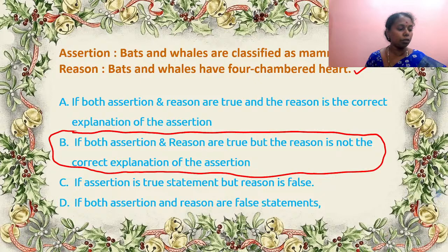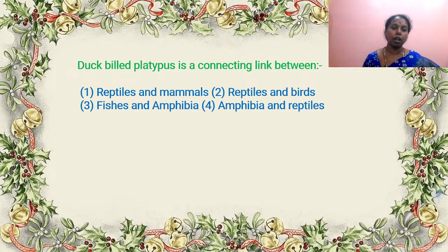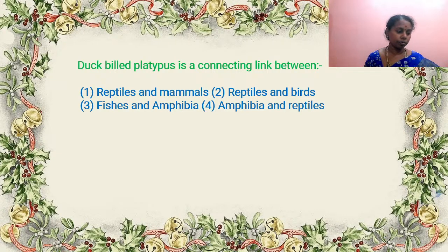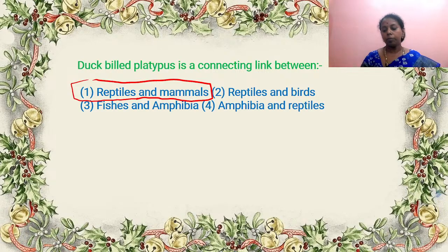Duck-billed platypus is a connecting link between what and what? You know it comes under mammals, but it is the only mammal that lays eggs. It is a connecting link between reptiles and mammals. Answer is A — very correct answer by Aruni and Jeeva and Arini Sri.